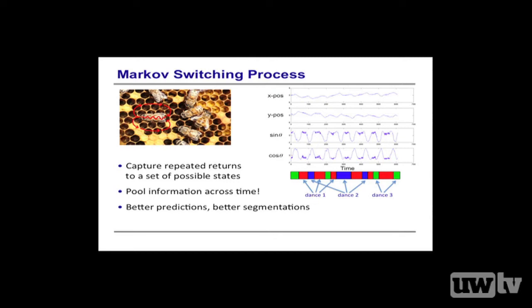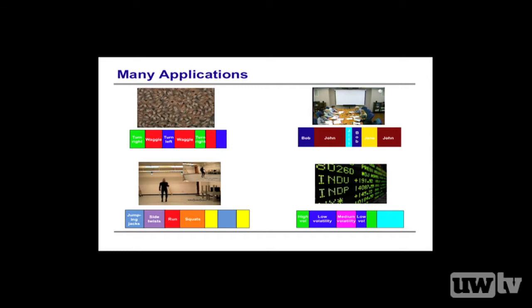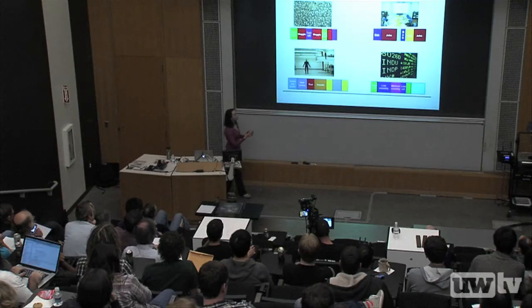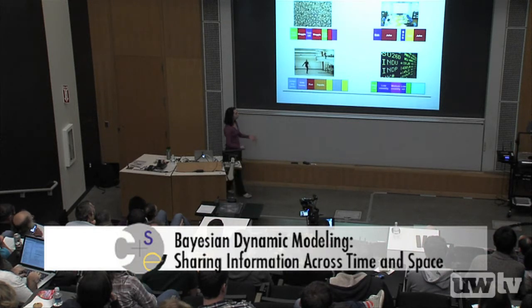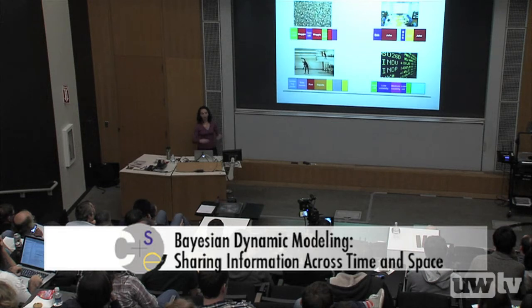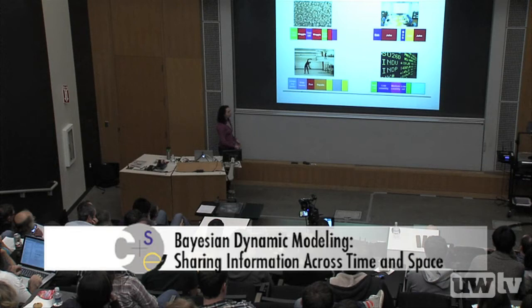Instead, if we capture the set of repeated behaviors present in the data, this enables us to pool information across time, leading to better predictions and better segmentations. When looking at parameters associated with a given state, we pool information across all instances of that state. This idea of repeated behaviors isn't unique to honeybee dances — it appears in many datasets. In conference audio, a speaker speaking early may speak again later. A person doing an exercise routine returns to behaviors they've done. In stock data, a common model assumes different regimes of volatility that we switch between.